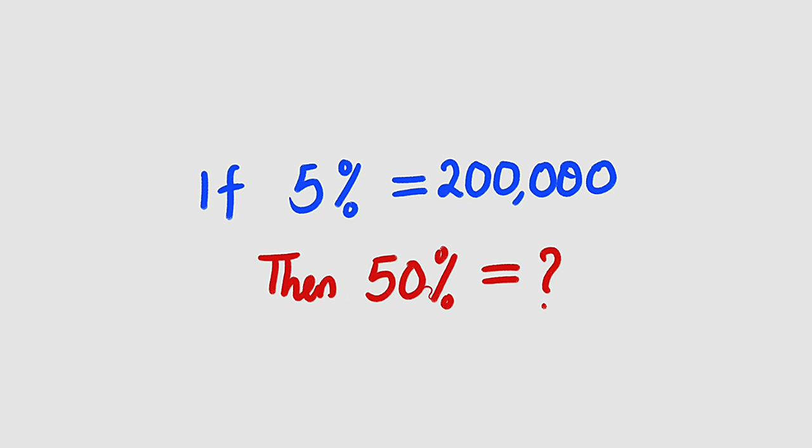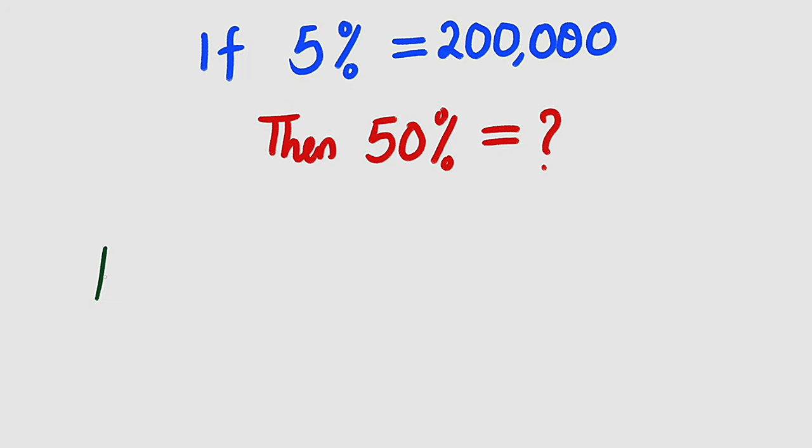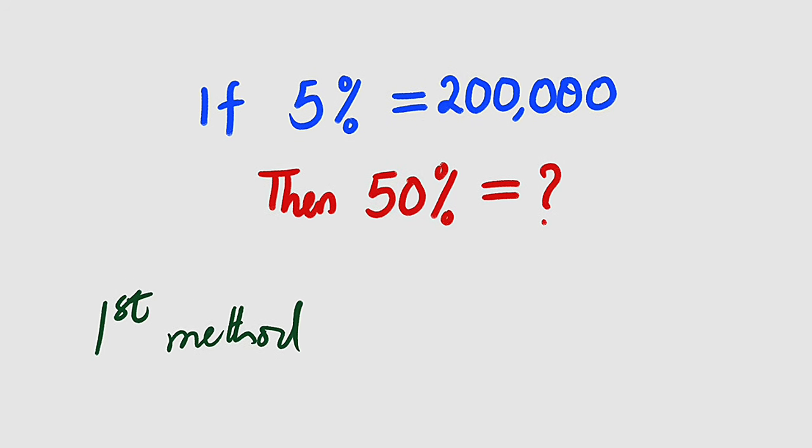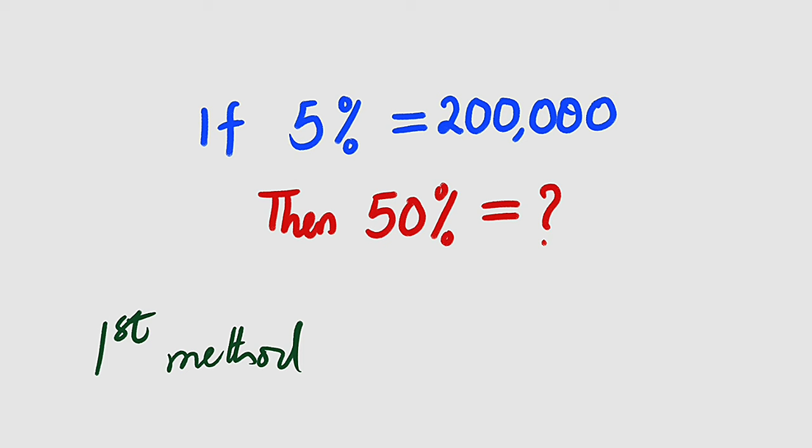I'm going to present you three different methods. Let's start with the first one. In the first method I would like to find five percent of what is exactly two hundred thousand, then we evaluate fifty percent of that value.